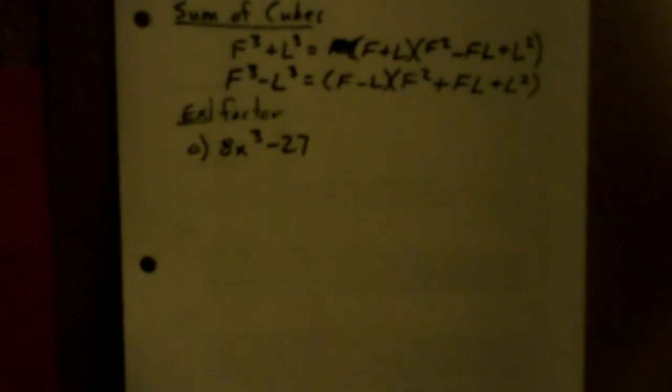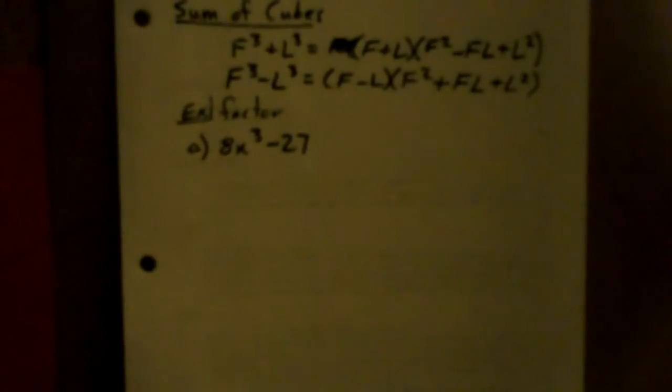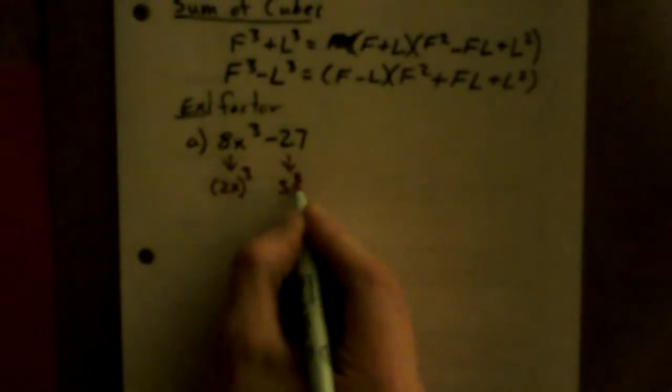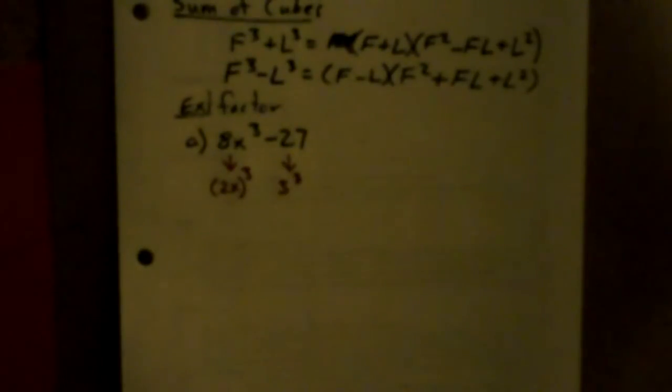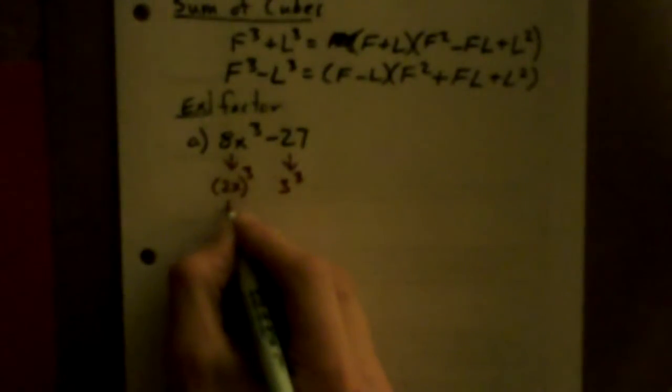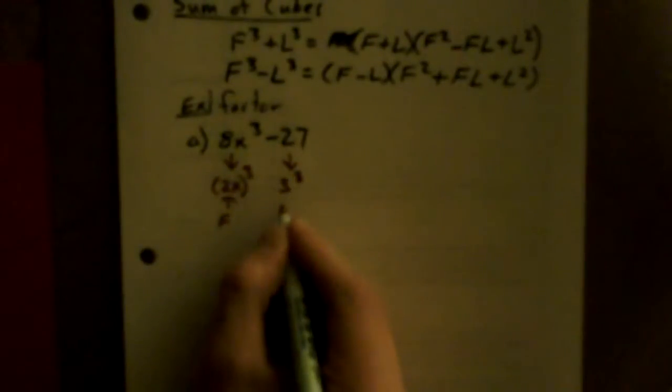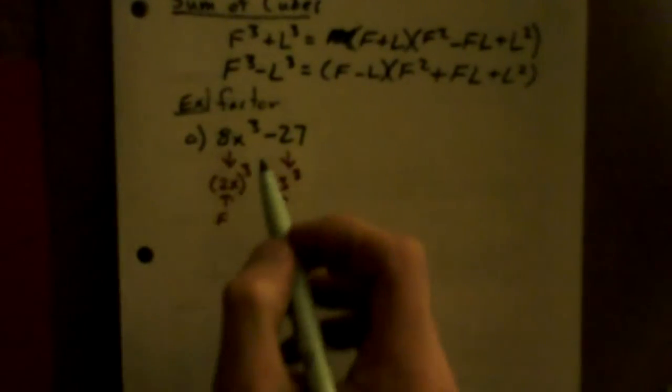Notice here that we have something cubed minus something cubed. It's a difference of cubes, so it's the second version. This is (2x)³ and this one is 3³. So this is like our F, this is like our L. In the minus version...